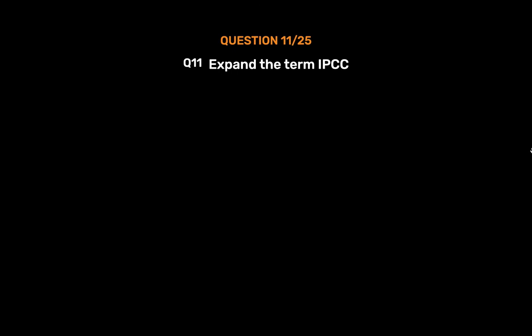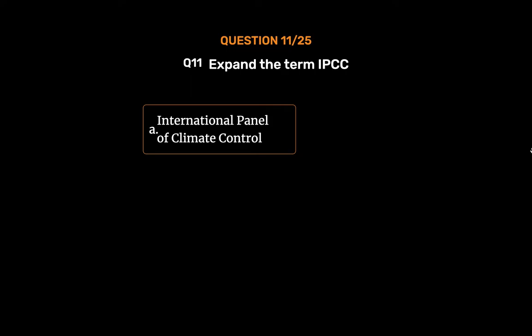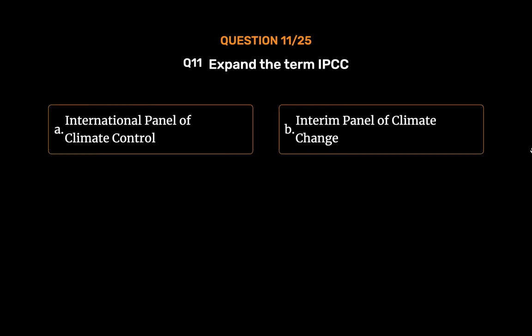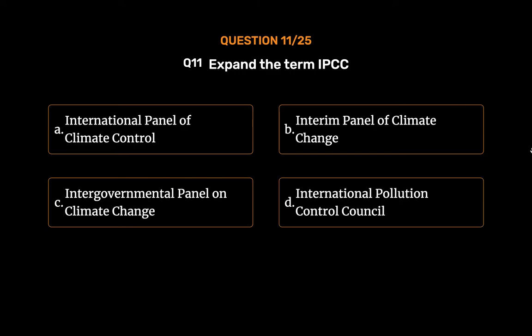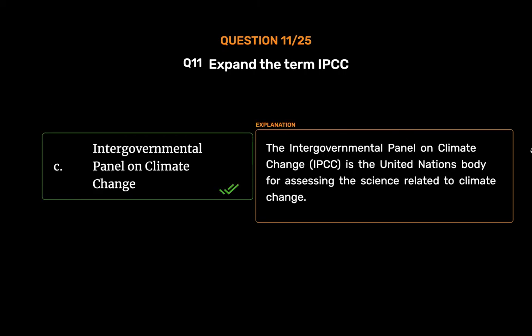Question No. 11. Expand the term IPCC: Option A. International Panel of Climate Control. Option B. Interim Panel of Climate Change. Option C. Intergovernmental Panel on Climate Change. Option D. International Pollution Control Council. The correct answer is Option C, Intergovernmental Panel on Climate Change. The IPCC is the United Nations body for assessing the science related to climate change.